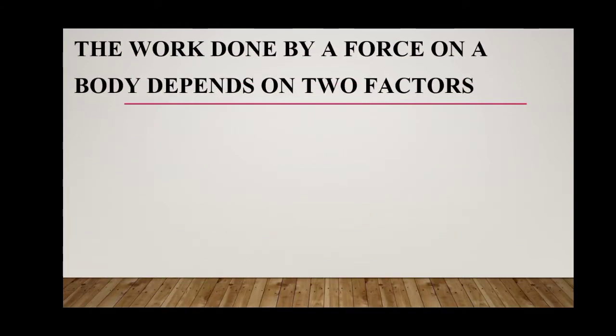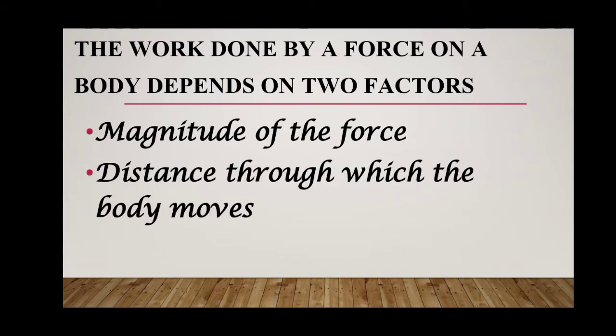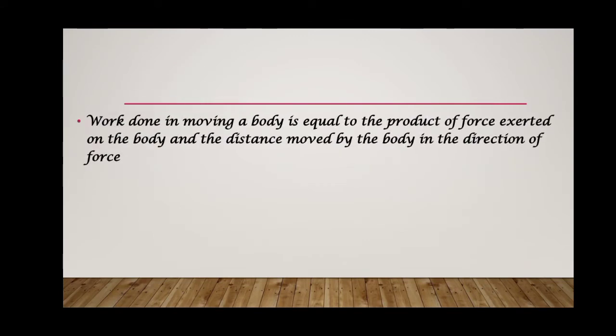The work done by a force on a body depends on two factors: magnitude of the force and distance through which the body moves. Work done by a body is equal to the product of force exerted on the body and the distance moved by the body in the direction of force. That is, work equals force times distance moved in the direction of force.